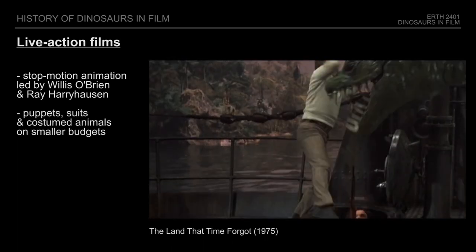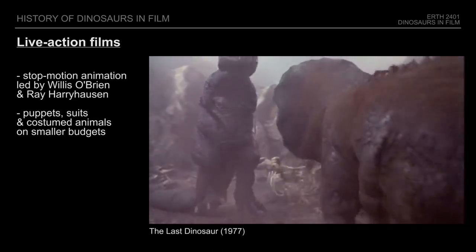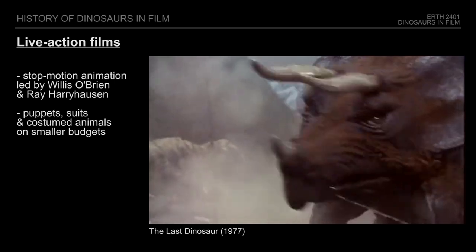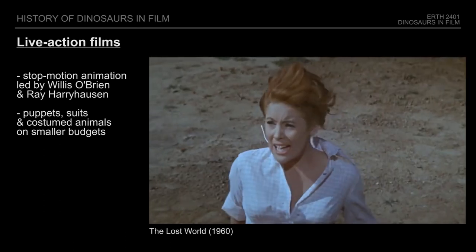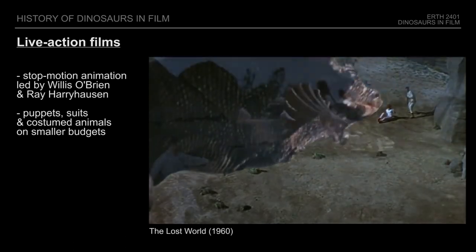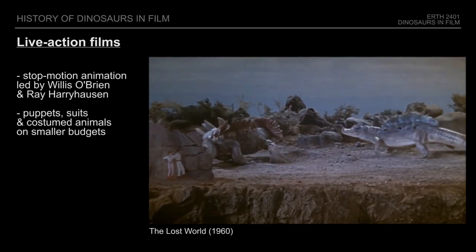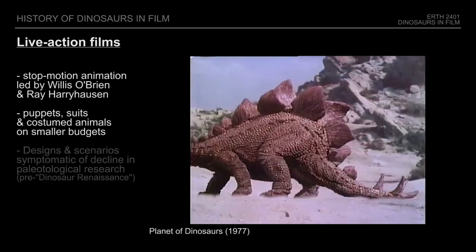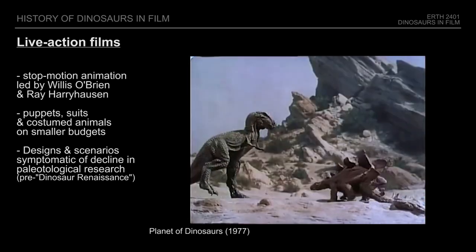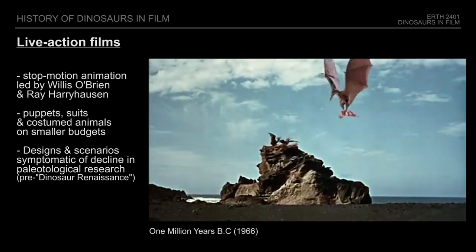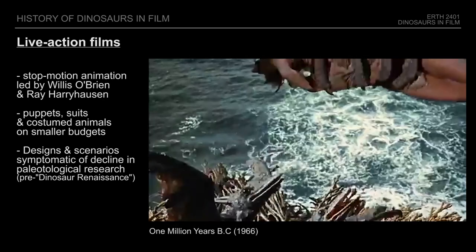Given the financial costs involved with stop-motion animation, some films would rather resort to other methods achievable on a smaller budget, including puppets or suits, and on occasion even using lizards and crocodiles with rubber prosthetics. It can also be noticed that designs and scenarios for dinosaurs would mostly favour stereotypes and inaccurate depictions, which is likely a symptom of the decline in scientific research before the dinosaur renaissance.